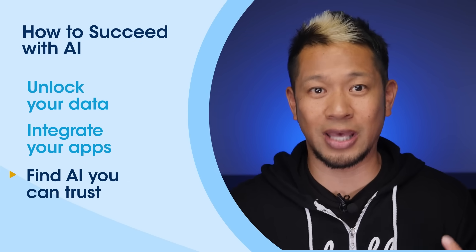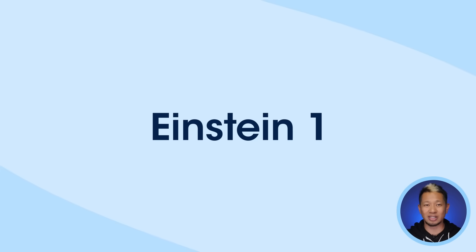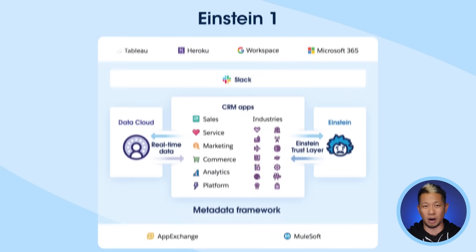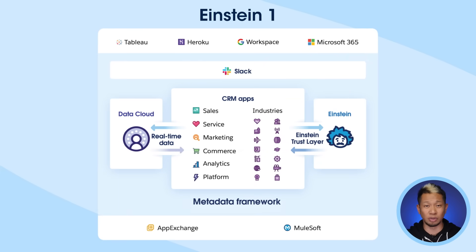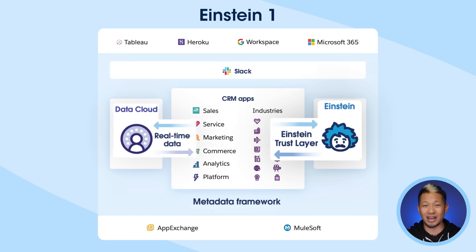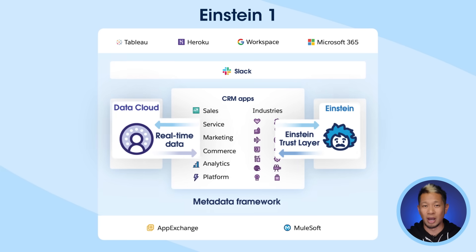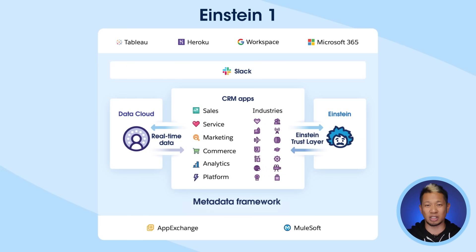Now, all of that can start to sound really complicated, but don't worry — Einstein One has you covered. I'm Brian Tong, and this is Salesforce Explained. Einstein One is the entire portfolio of Salesforce products that brings together CRM tools for sales, service, marketing, commerce, and more. With trusted AI and data on one integrated platform, Einstein One helps you deliver better customer experiences by applying everything you know about your customer to every interaction.